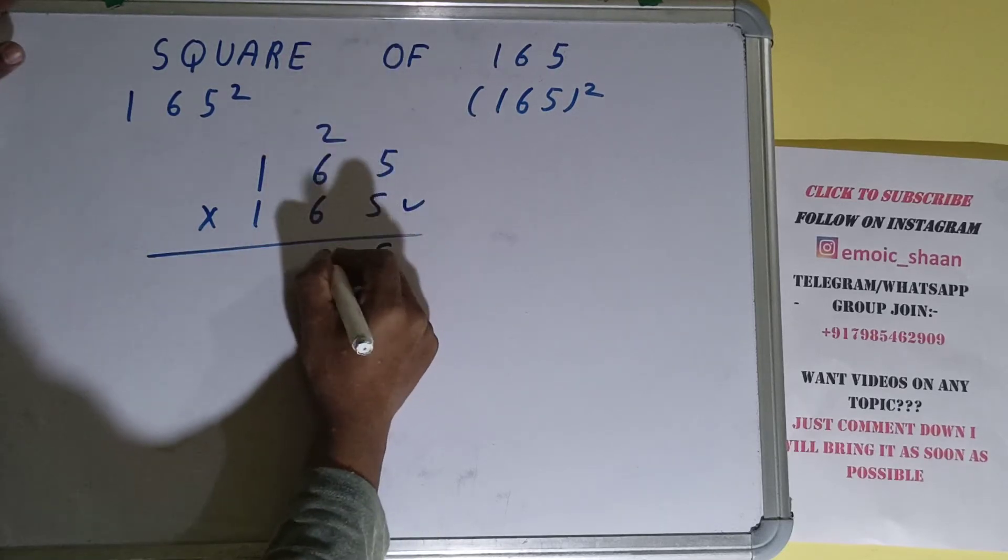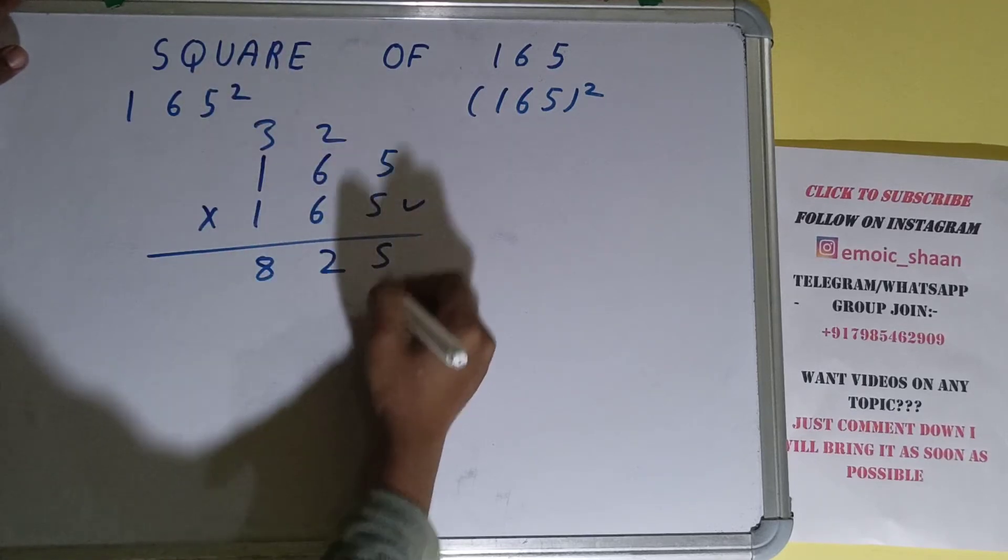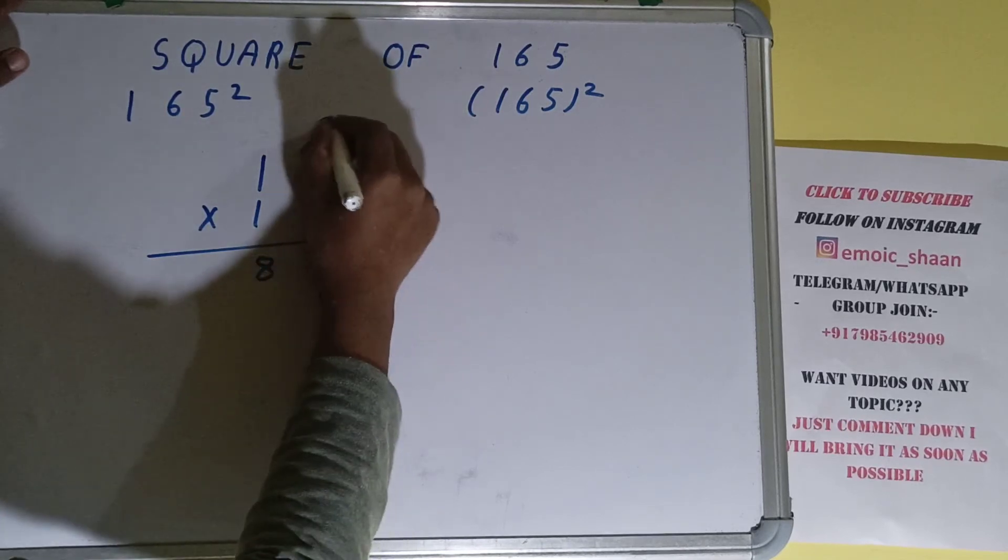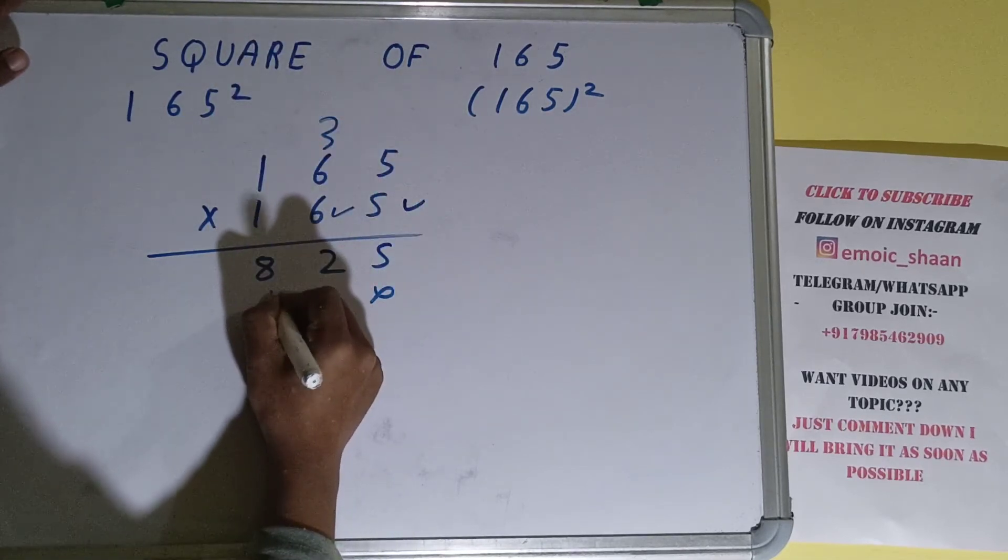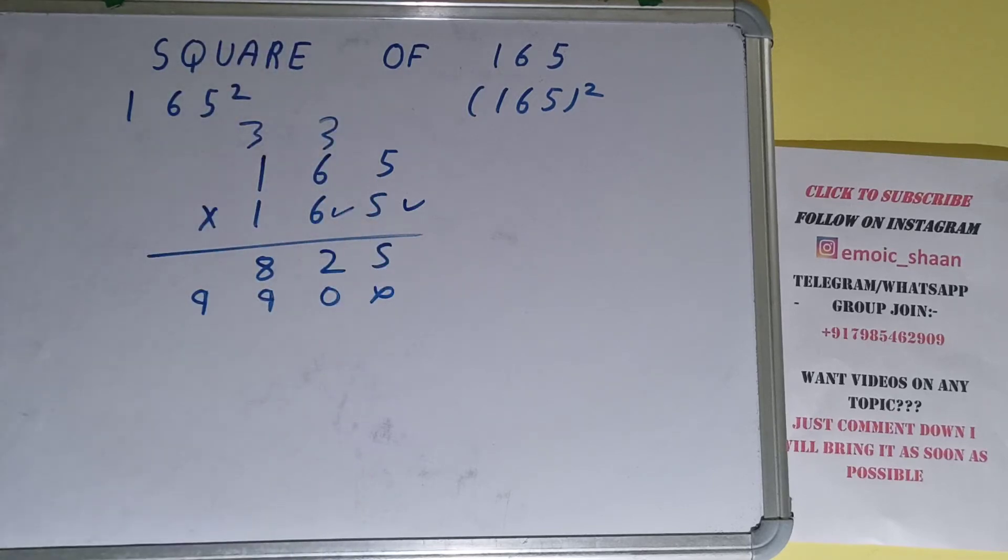5 times 6 is 30 plus 2 is 32, 2 down, 3 carry. 5 times 1 is 5 plus 3 is 8. Now this 6: 6 times 5 is 30, 0 down, 3 carry. 6 times 6 is 36 plus 3 is 39, 9 down, 3 carry. 6 times 1 is 6 plus 3 is 9.